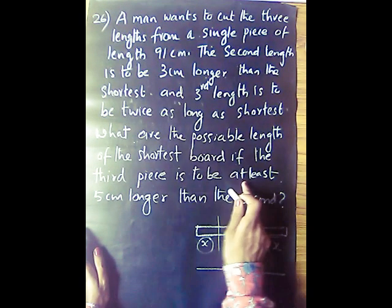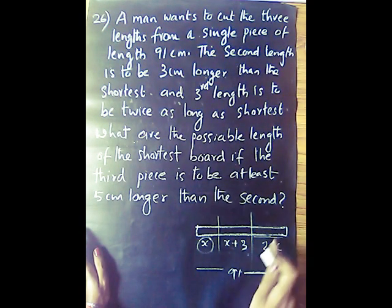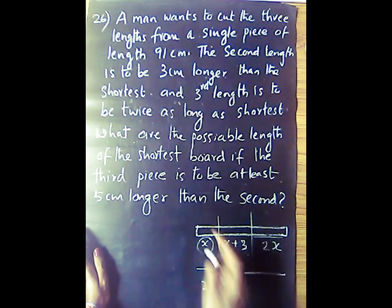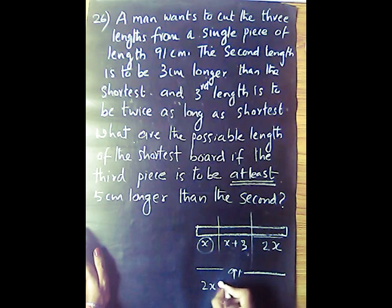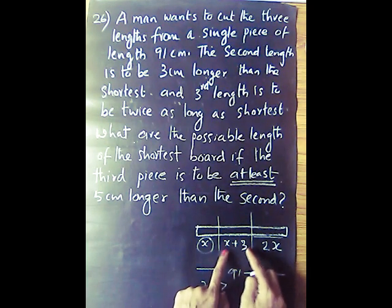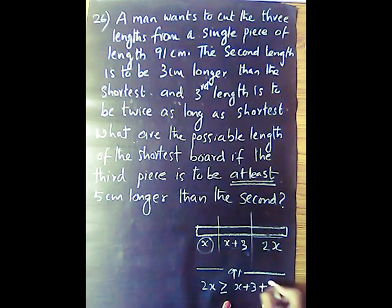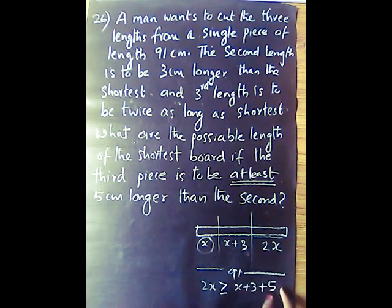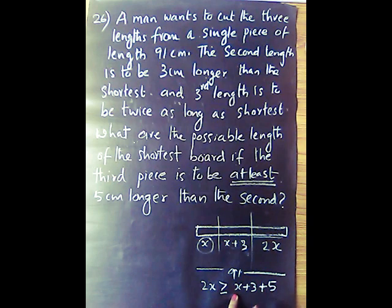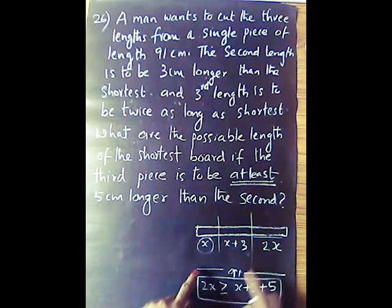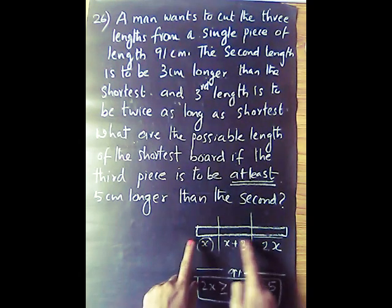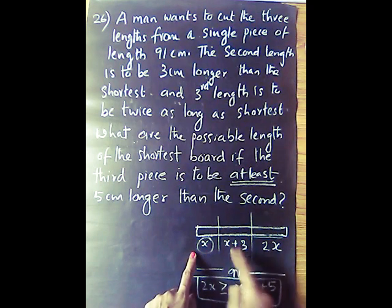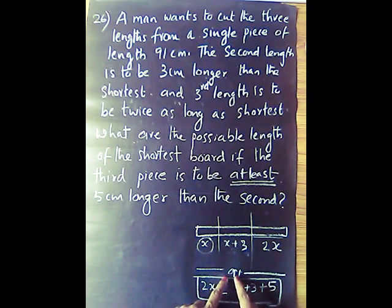The third piece is to be at least 5 cm longer than the second piece. So the third piece 2x is greater than or equal to x plus 3 plus 5. Also, the total length of all pieces must be less than or equal to 91 cm.